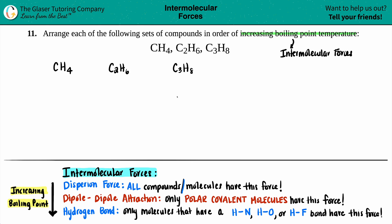Let's draw the Lewis structures. CH4: I have a carbon in the middle surrounded by four hydrogens and no lone pairs. That's CH4. C2H6: I have two carbons bound together, with three hydrogens on each side — one, two, three, four, five, six — and no lone pairs here.